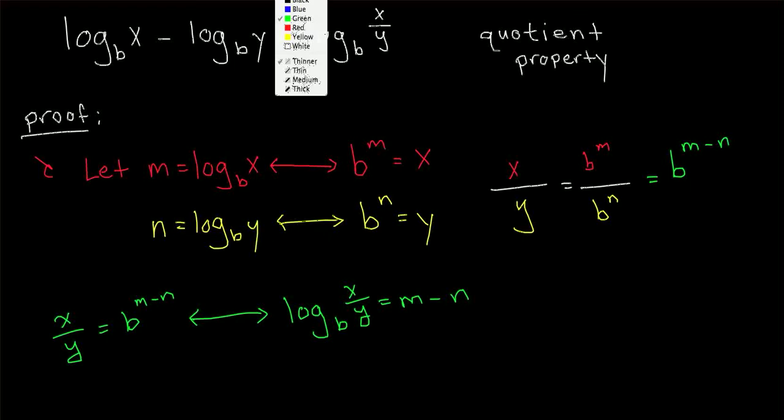Well, what was m and what was n? m was log base b of x and n was log base b of y. And we're subtracting those two.